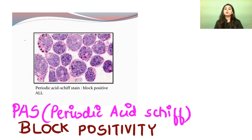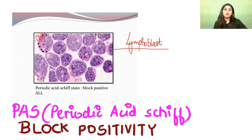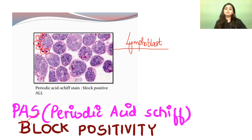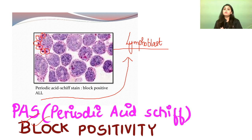PAS — periodic acid-Schiff. P for PAS, P for pink — the colour PAS gives is pink. In the case of a lymphoblast, PAS gives a special block positivity pattern — the pink colours appear as blobs or blocks, not diffusely throughout the cell. So PAS is used for staining a lymphoblast, and the kind of positivity is block positivity.